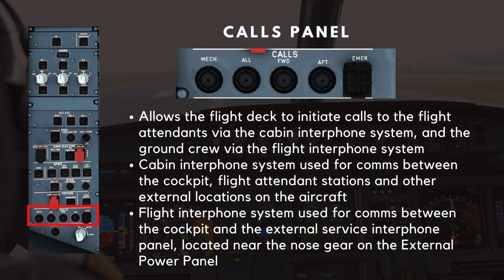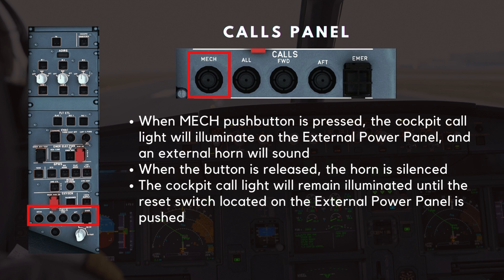The next section is the calls panel. This panel allows the flight deck to initiate calls to the flight attendants via the cabin interphone system, and the ground crew via the flight interphone system. The cabin interphone system is used for communication between the cockpit, flight attendant stations, and other external locations on the aircraft. The flight interphone system is used for communication between the cockpit and the external service interphone panel located near the nose gear on the external power panel. When the mech push button is pressed, the cockpit call light will illuminate on the external power panel and an external horn will sound.